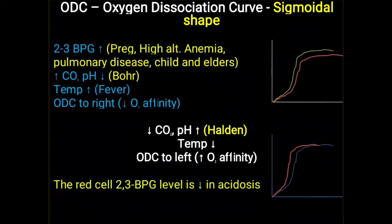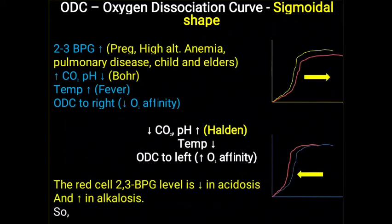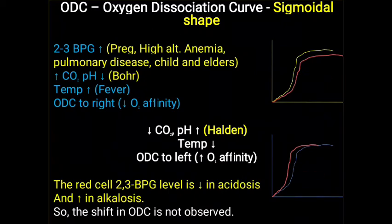Sometimes questions are asked about acidosis and alkalosis. Inside the red cell, 2,3-BPG level is decreased in acidosis and increased in alkalosis as a compensatory mechanism. Because of this compensation, there is exactly no net shifting of the ODC observed. The Bohr effect and Haldane effect help make deoxyhemoglobin and oxyhemoglobin, but 2,3-BPG helps maintain oxygen delivery, and no significant ODC shifting is observed in acidosis or alkalosis.